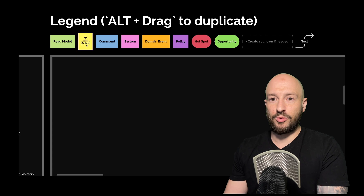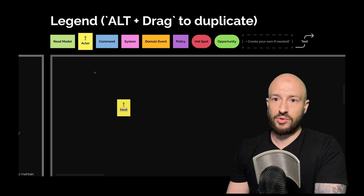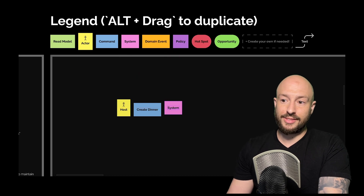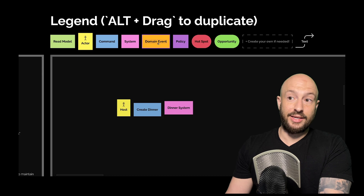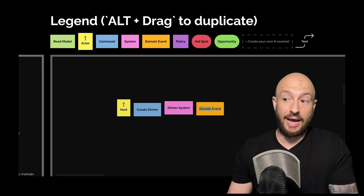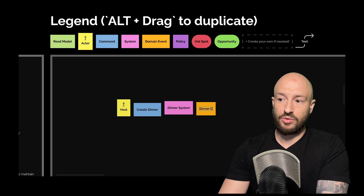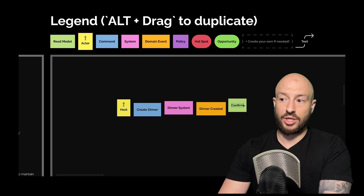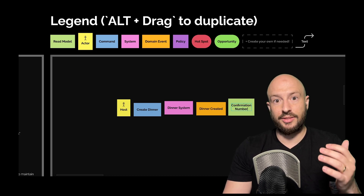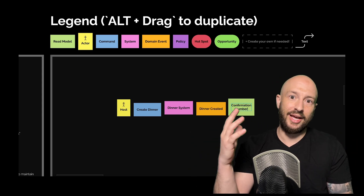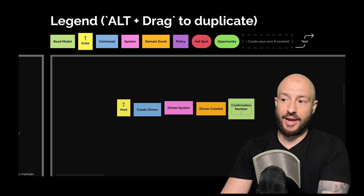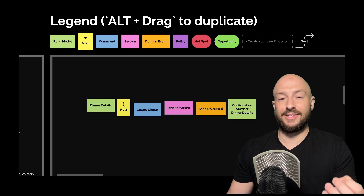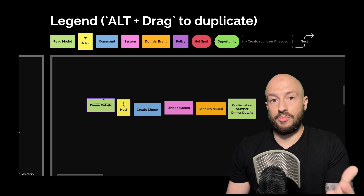For process modeling, imagine we have the host who wants to create a dinner. He invokes the command 'create dinner.' A command is invoked on some system — let's say the dinner system. This system raises a domain event, something interesting that happened: in our case, 'dinner created.' The event results in a read model — basically information returned to the user, like a confirmation number and the dinner details needed for the view or for the system to make decisions.